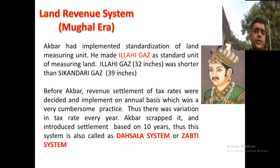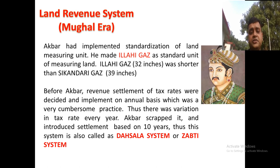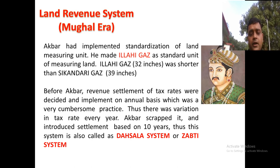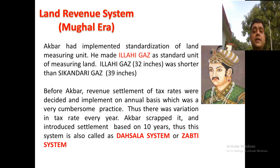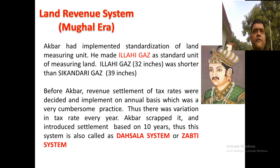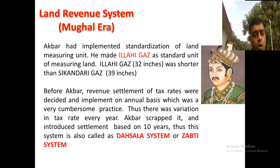Akbar introduced the 'Ilahi Gaj' as the standard unit of land measurement, fixed at exactly 32 inches, replacing the variable Sikandari Gaj. Before Akbar, revenue settlements were decided on an annual basis; Akbar scrapped this and introduced a 10-year settlement, ending yearly fluctuations in tax rates so farmers could do long-term planning. This 10-year system was called the 'Sal' or 'Zabti' system.